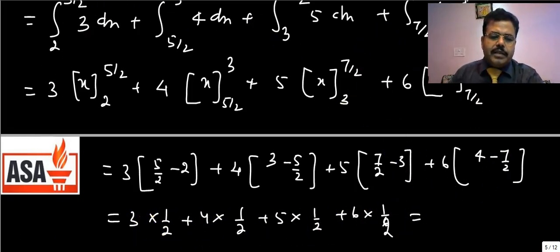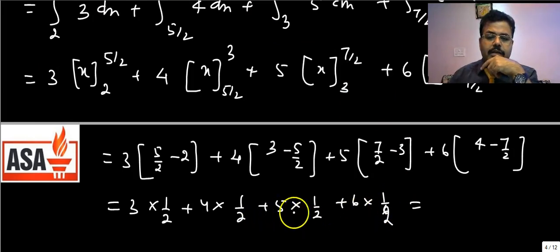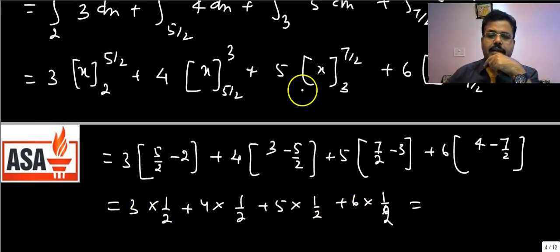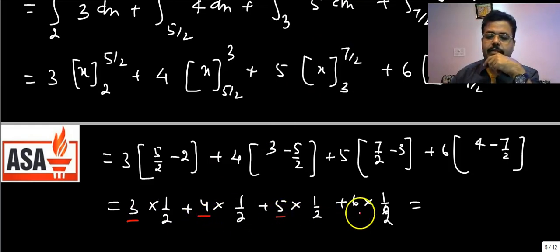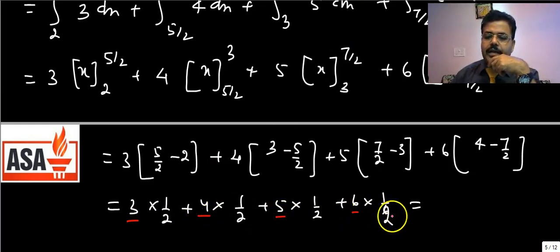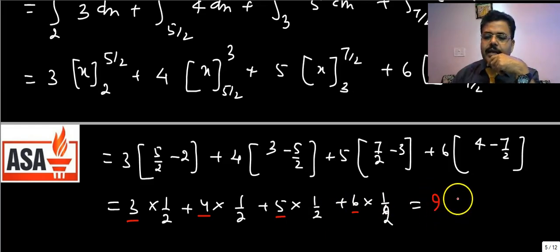Let us verify our shortcut method here. The minimum value was 3 (correct), and the maximum value is: 2(4)−1=7, not 9 as mistakenly stated earlier. So the correct set of values is 3, 4, 5, 6, 7 — reject 7 (maximum). Sum of remaining values: 3+4+5+6=18. Multiply by the common difference 1/2: 18×(1/2)=9. Answer confirmed as 9.